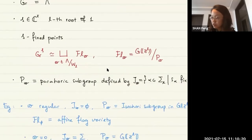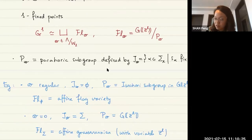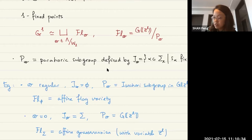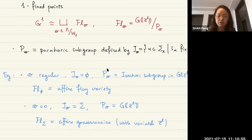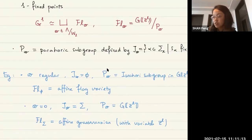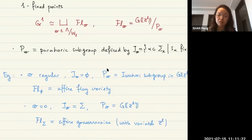As special cases: if μ is a regular element not lying on any hyperplanes for affine reflections, the stabilizer set is empty and the parahoric subgroup is the Iwahori subgroup, so the component is an affine flag variety. On the other hand, if μ = 0, it is fixed by all finite simple roots, so the parahoric subgroup is G[[z^l]] and the component is an affine Grassmannian — the same as before but with z replaced by z^l.